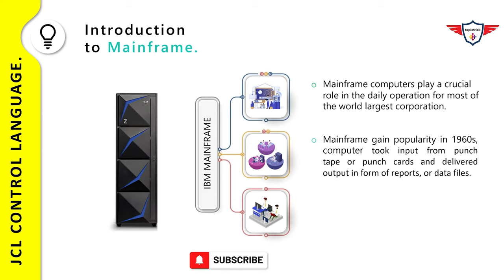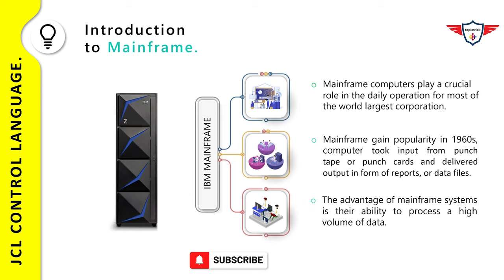The origin of mainframe computers dates back to the 1950s. In those days, mainframe computers were not just the largest computers — in fact, they were the only computers, and very few businesses could afford them. In 1960, the course of computing history changed dramatically when mainframe manufacturers began to standardize the hardware and software offered to customers. The first wave of customer business applications were mostly written in Assembler, COBOL, FORTRAN, or PL1, and a substantial number of these older programming languages are still in use.